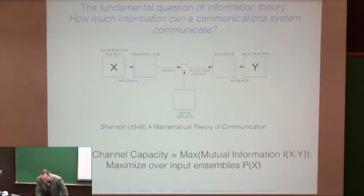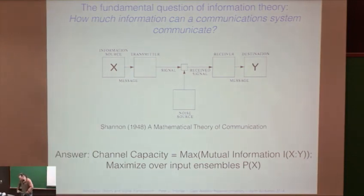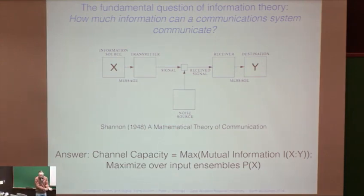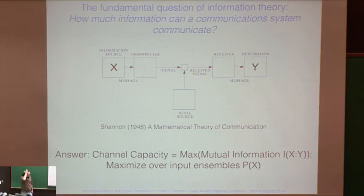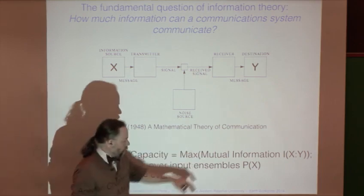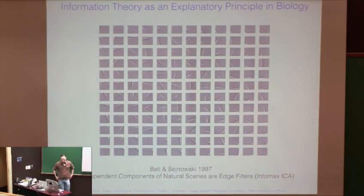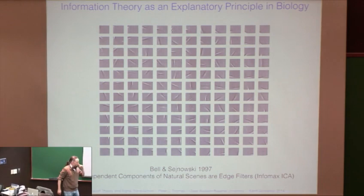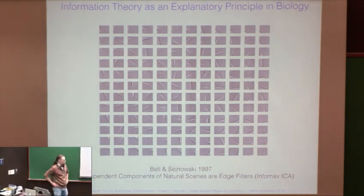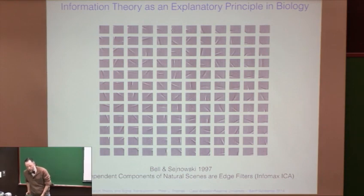Glossing over that idea — although I will come back to it at the end of the talk — the object that quantifies how much information a system can carry is the channel capacity. That's the maximum of the mutual information over all the possible ways that you could set up the input ensemble. The question is: what does this have to do with biology? As Andrew mentioned, there are quite a number of success stories, particularly in the realm of sensory processing.